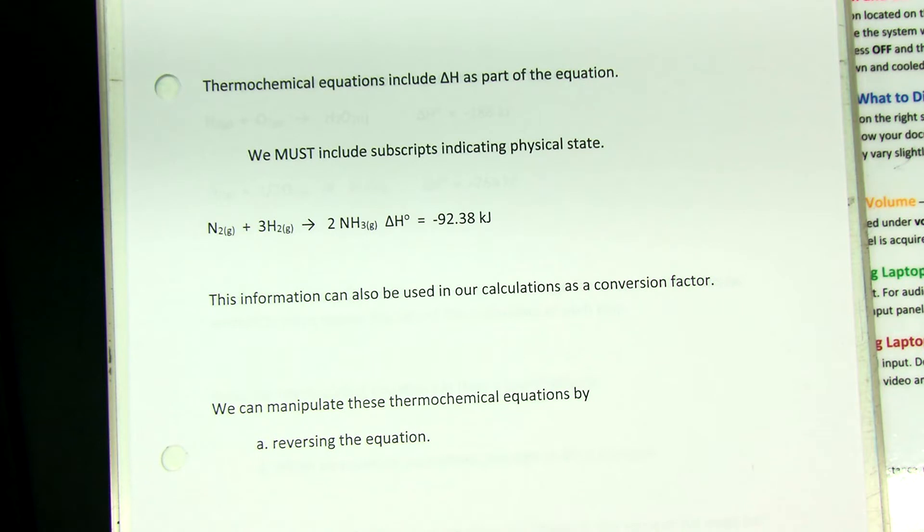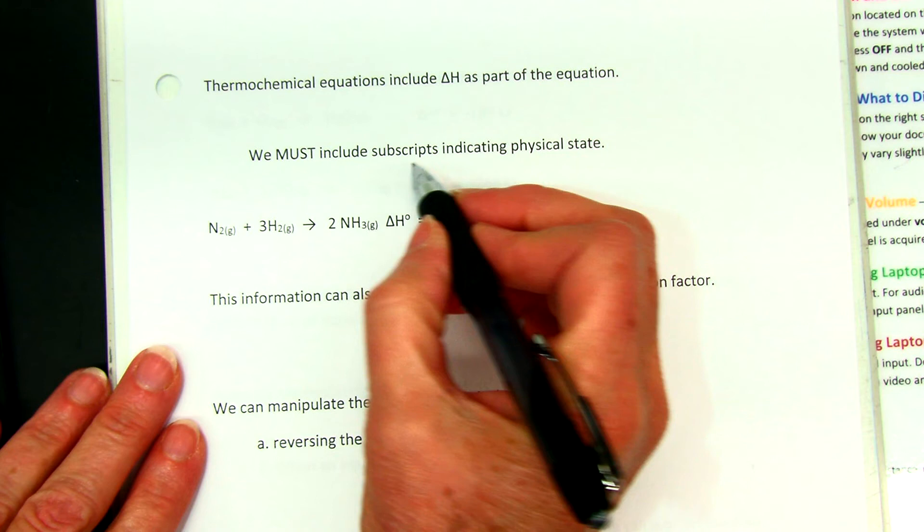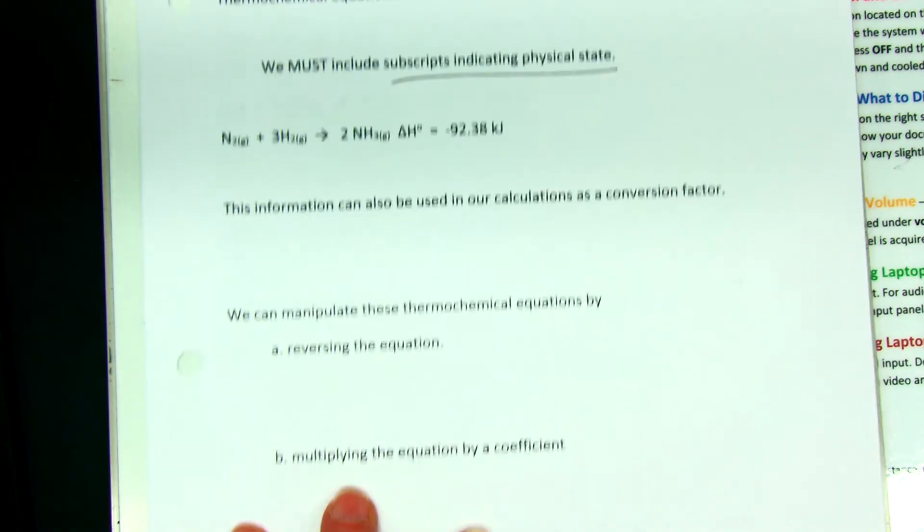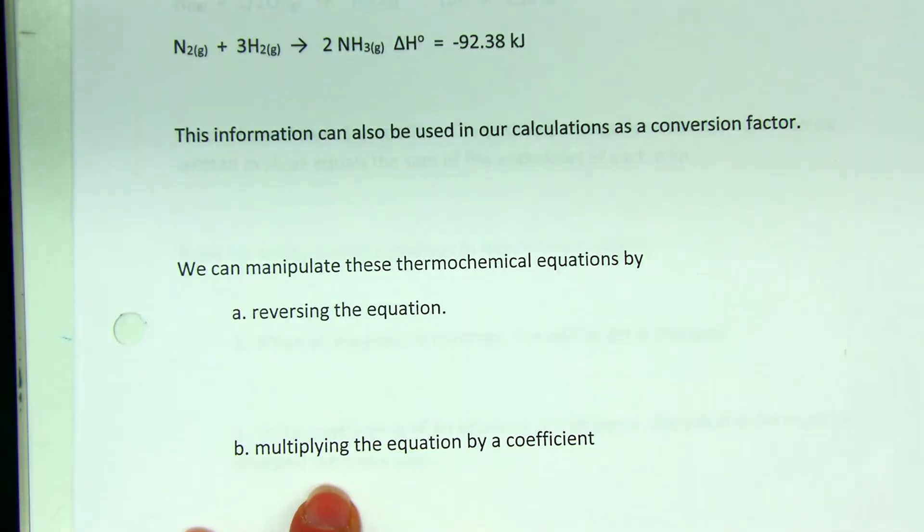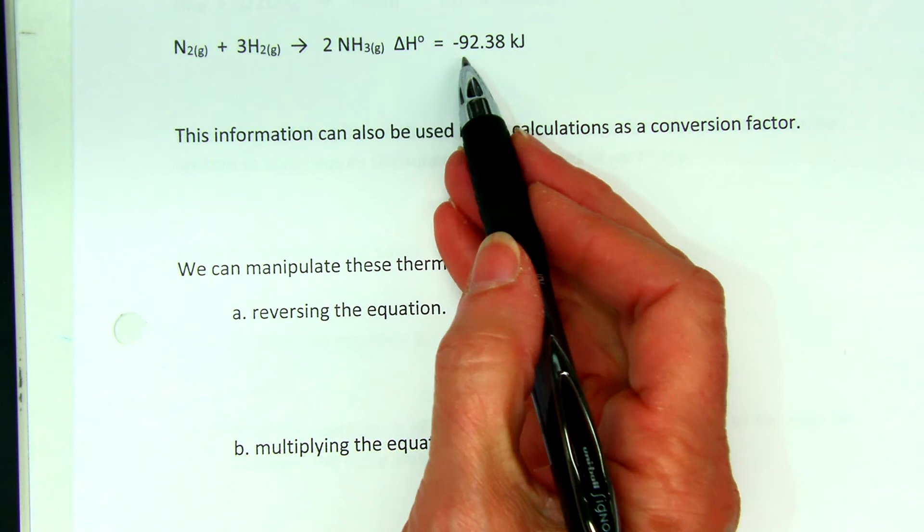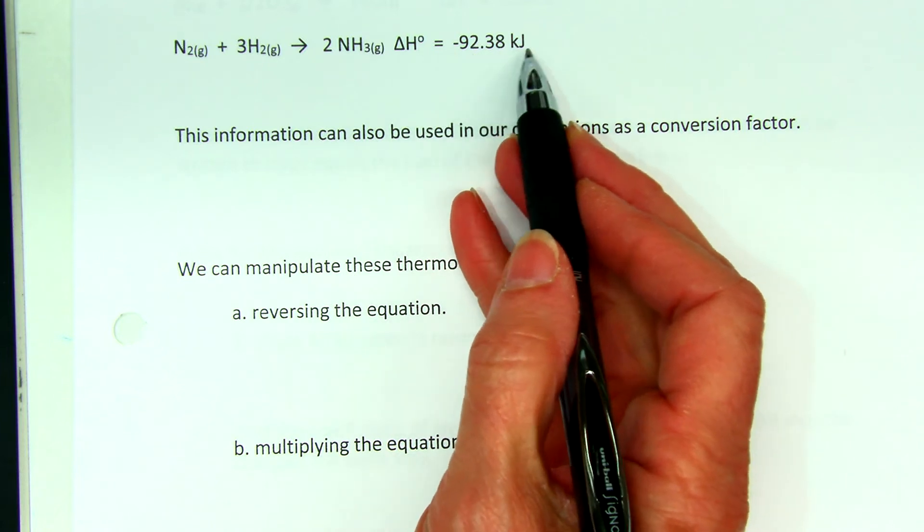Now, because we're looking at energy changes, it's critical that we include the subscripts for physical states. So let's look at a typical equation. We have nitrogen reacting with hydrogen gas to give us two ammonia gas. And we write at the end, delta H zero is negative 92.38 kilojoules.